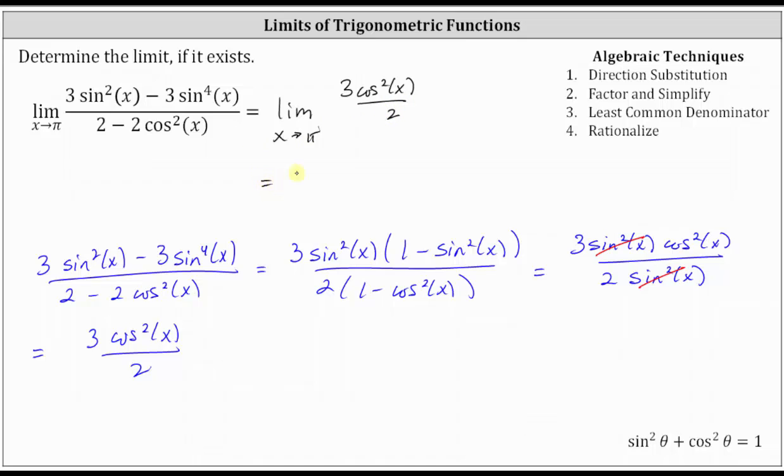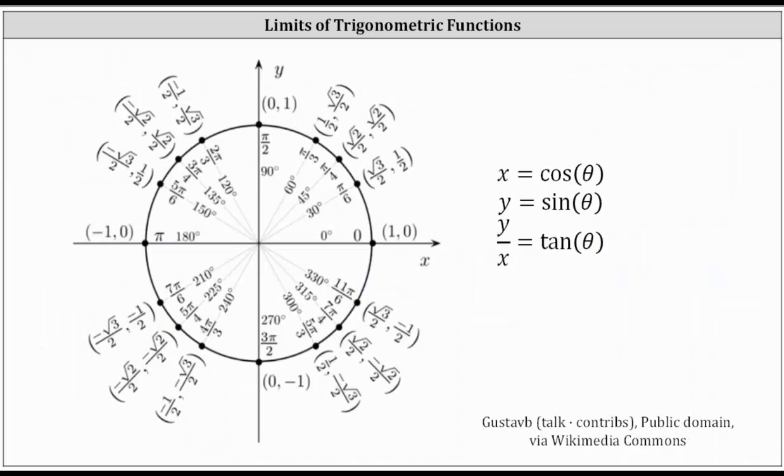The limit is equal to three times the square of cosine pi divided by two. Well, cosine pi is equal to negative one. We need to make and check the unit circle. Remember, on the unit circle, x is equal to cosine theta. The terminal side of pi radians is here along the negative x-axis, where the x-coordinate is negative one.